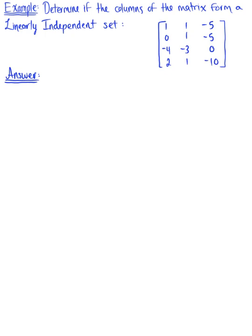Determine if the columns of the matrix form a linearly independent set. Looking at this given matrix, let's label these column vectors: a sub 1, a sub 2, and vector a sub 3.